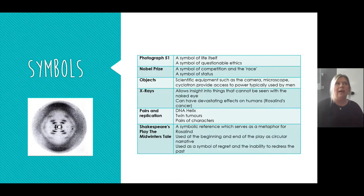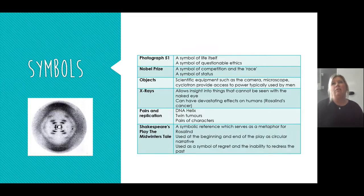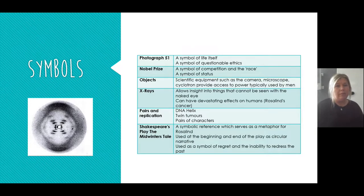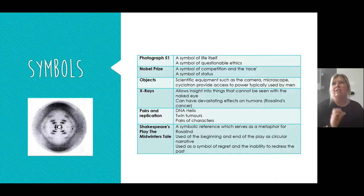One thing not seen much in the SAC — which could really help in the exam, worth 50% of your overall mark — is discussion of symbols. You could look at Photograph 51 itself as a symbol of life or questionable ethics; the Nobel Prize as a symbol of competition, a race, a symbol of status that each character wants but for different reasons. Rosalind, in contrast, is determined to simply get the science right — the accolade meaning much more to Watson and Crick.